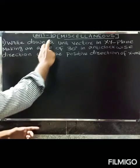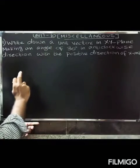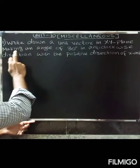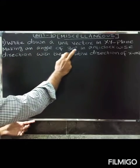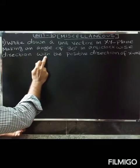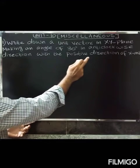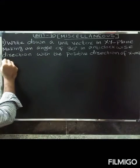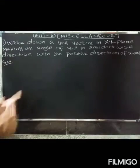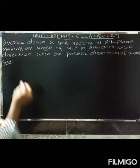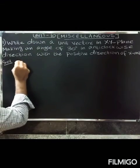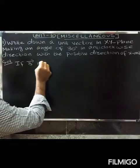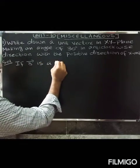Welcome friends. We are going to Unit 10. First question: write down a unit vector in the XY plane making an angle of 30 degrees in the anticlockwise direction with the positive direction of the x-axis. So, write down a unit vector in the XY plane.